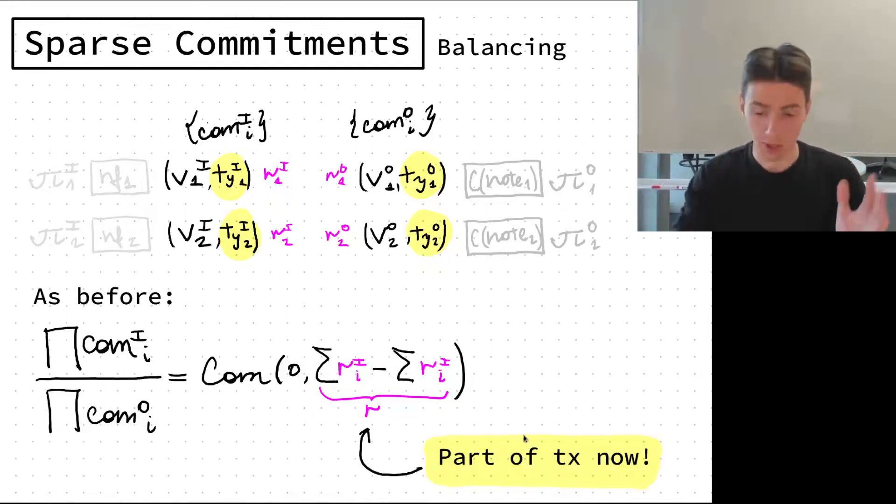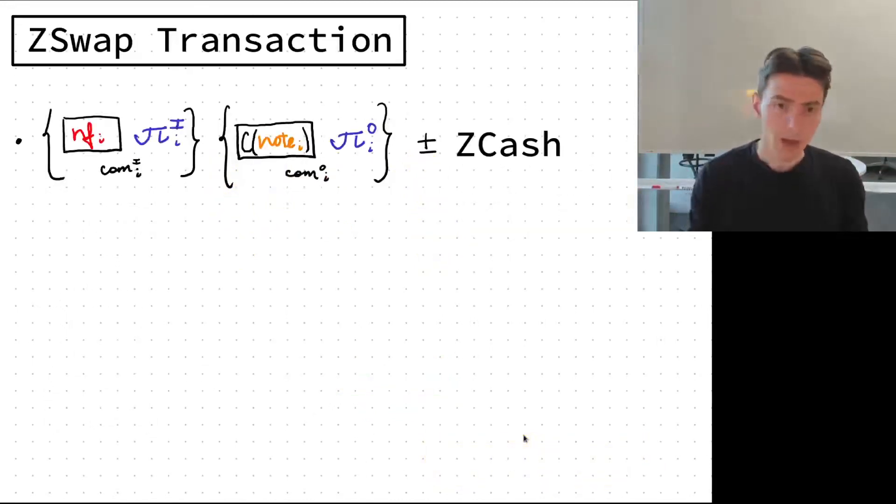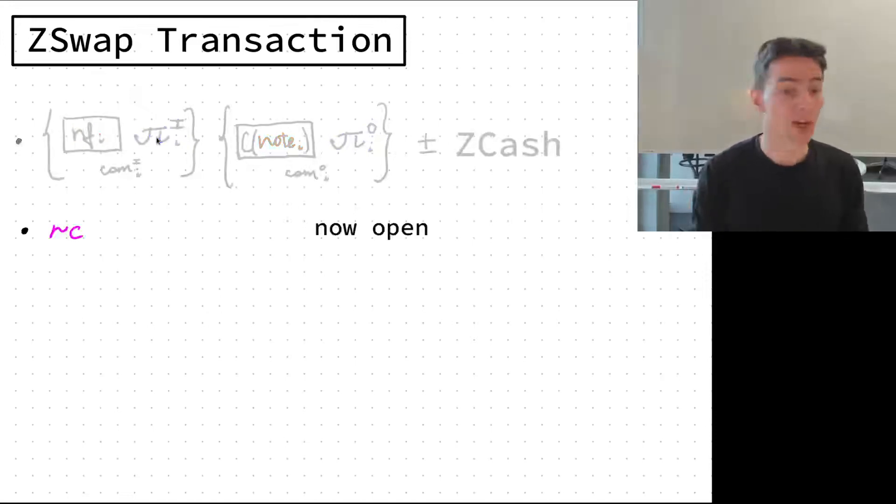The Zswap transaction comprises of the basic bits, nullifiers, commitments to the output notes, zero knowledge proofs and this vector Pedersen commitments. What's interesting is this open randomness which allows us to merge but not split things.